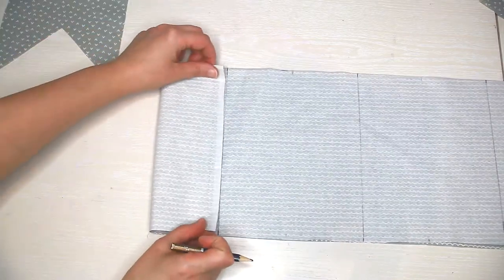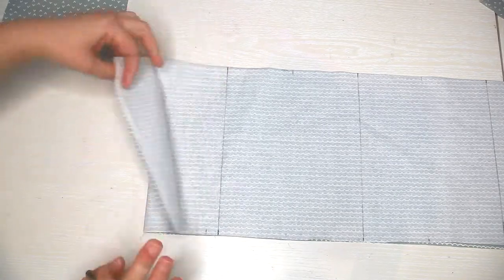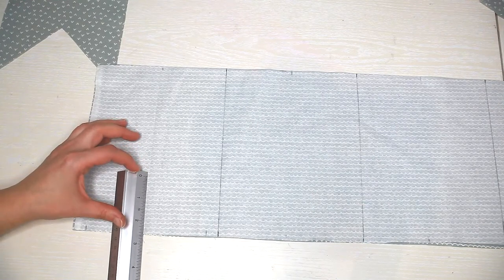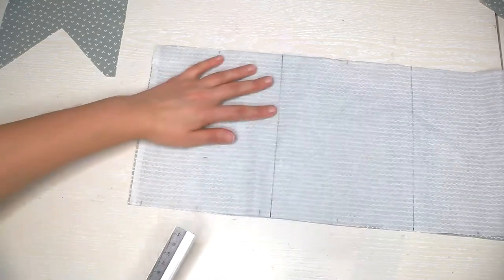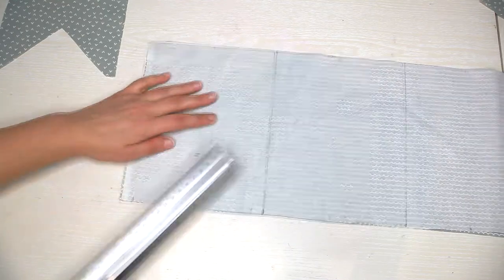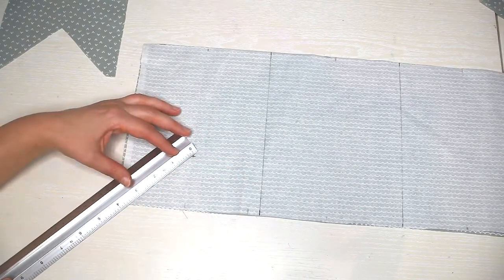Then fold the flag in half, pressing with the fingers to create a fold. Open and take your ruler and mark on the middle fold at 2 and a half inches. Then you just need to connect all the marks to create the bottom of the flag.